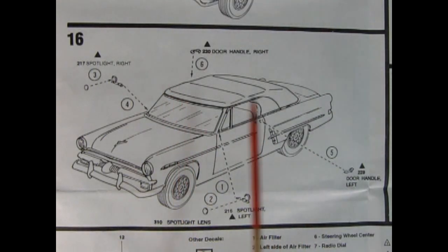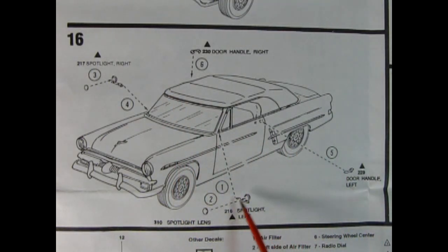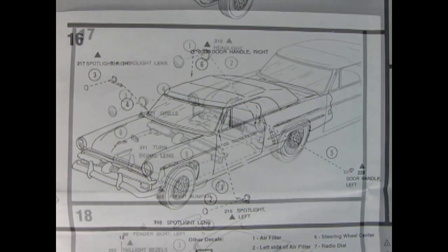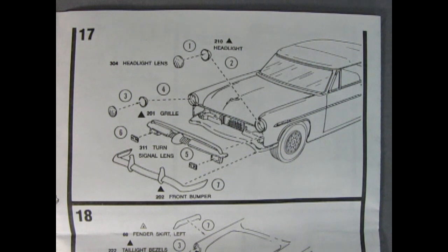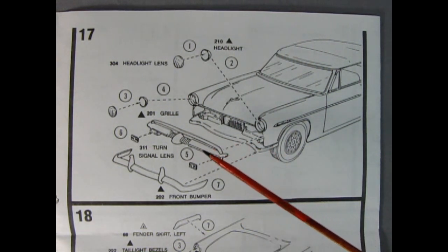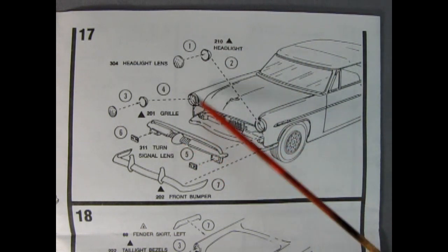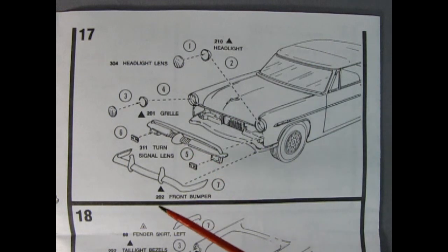Panel 16 shows our door handles being glued on and then our spotlights which go in the little hole on the side of the windshield. Did you notice something about that last panel? Well if you did you win a little prize. Yeah well not really a prize but bragging rights. What it was is you got to see the headlights on there and the grille in the front bumper before we actually put them on the model.